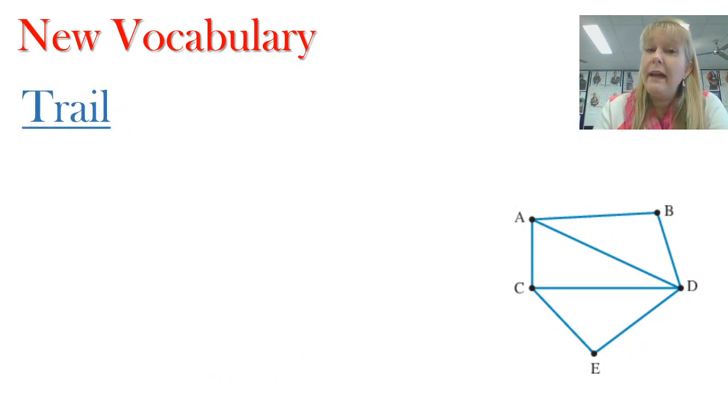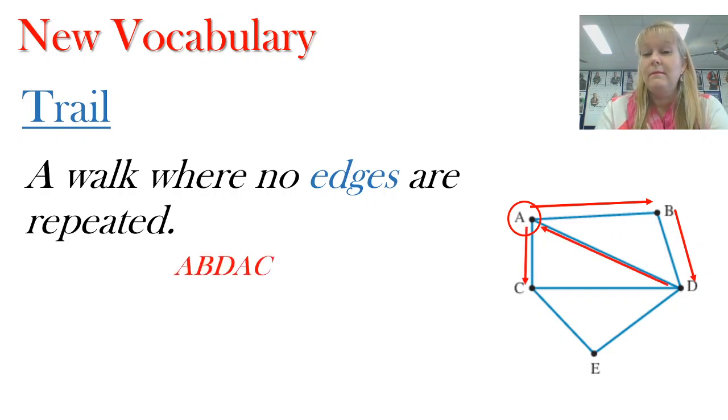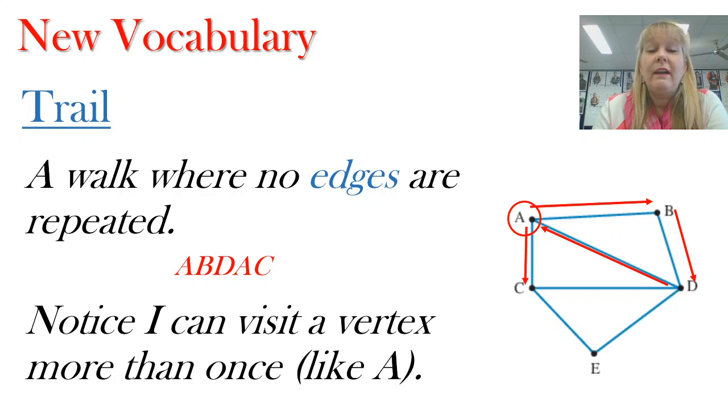Now we have something called a trail and a trail is a special kind of walk where no edges are repeated. So in this particular case I could go from A to B to D and then back to A again and then I could go to C and then I could if I wanted to I could go to E and to D. Doesn't really matter as long as I don't travel on the same edge more than once. A, B, D, A, C. I can visit a vertex as many times as I like as long as I'm not backtracking with those edges.